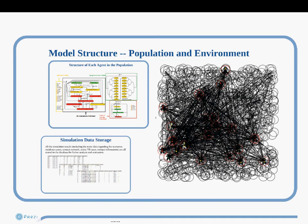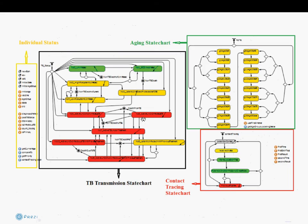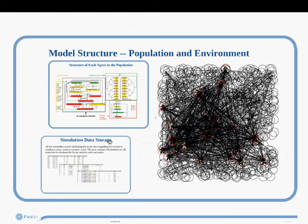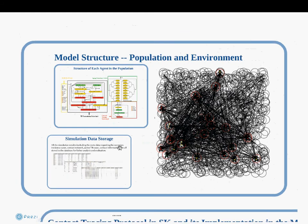Within this model we operate on a population located within a network representing people's contact patterns. Each agent is associated with a set of characteristics including their TB status, their status in terms of contact with the healthcare system, whether they're known or identified as a case, what stage of the process they're in, and their age. The model is richly linked to a database that records cases and their contacts.